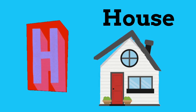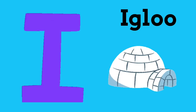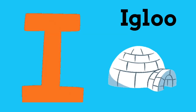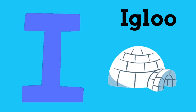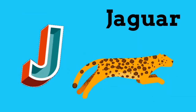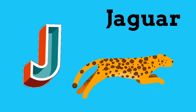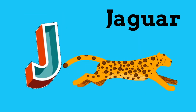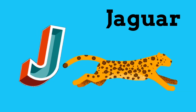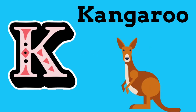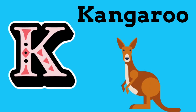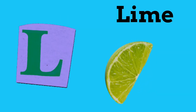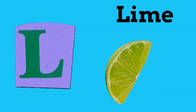H is for House. House. I is for Igloo. Igloo. J is for Jaguar. Jaguar. K is for Kangaroo. Kangaroo.